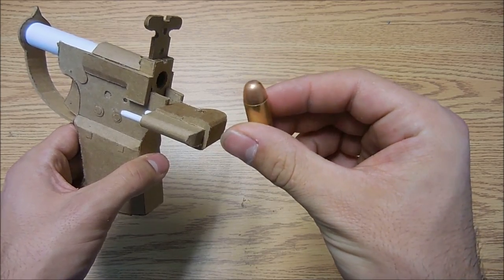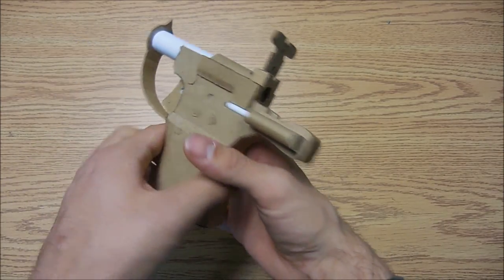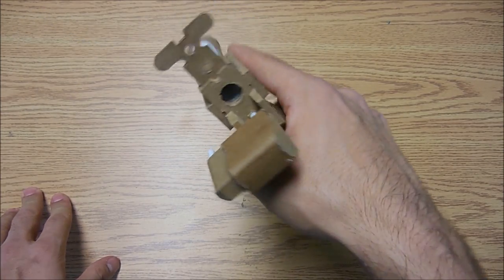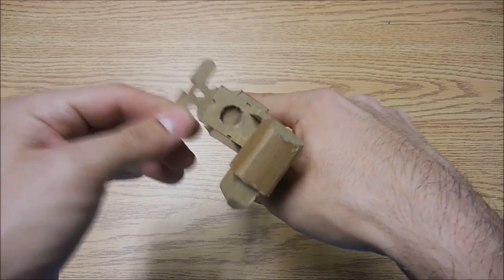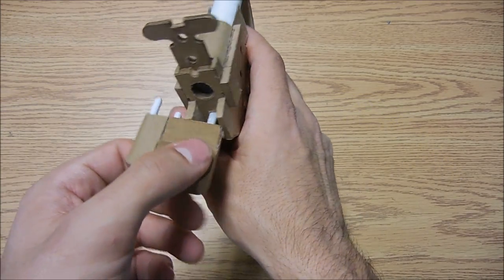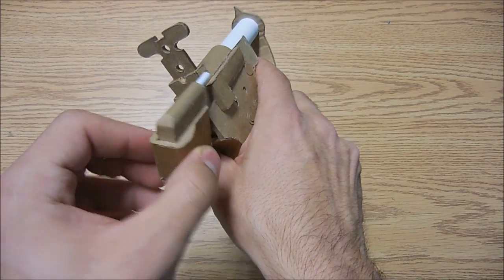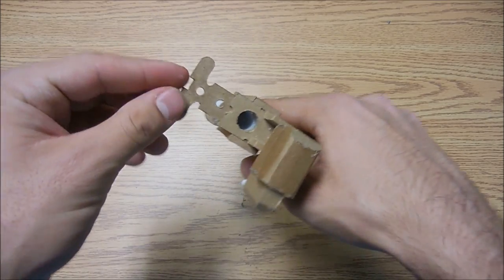This is sized to use a real .45 ACP cartridge. With the action open, you can see what it looks like unloaded. You can see that the breech plate slides up and down to allow the cartridge to be locked into the chamber. And the striker can pivot a full 360 degrees. It isn't constrained in any real way.